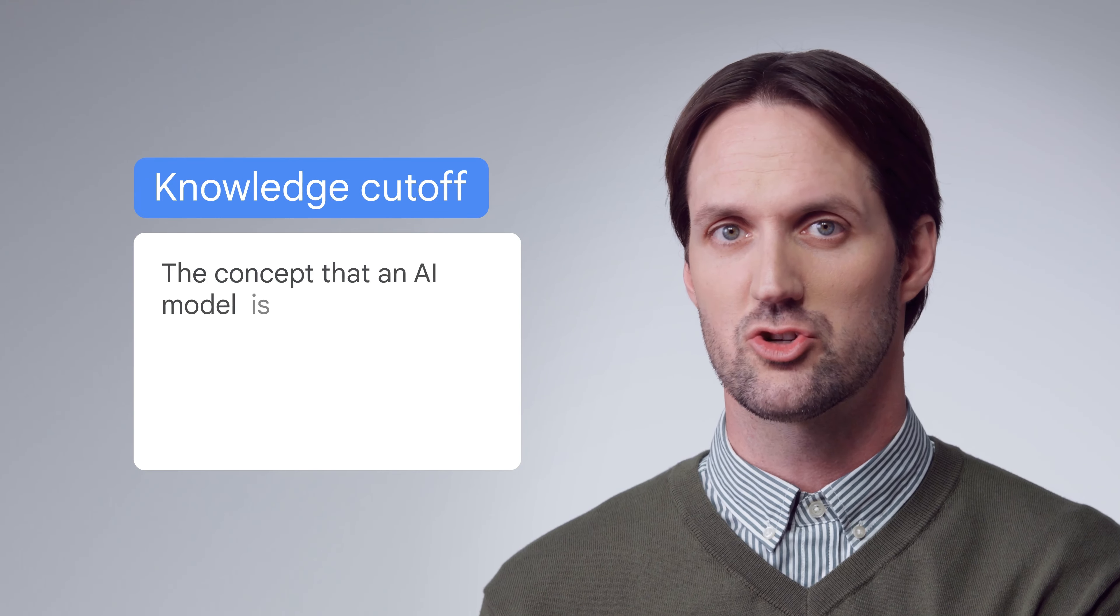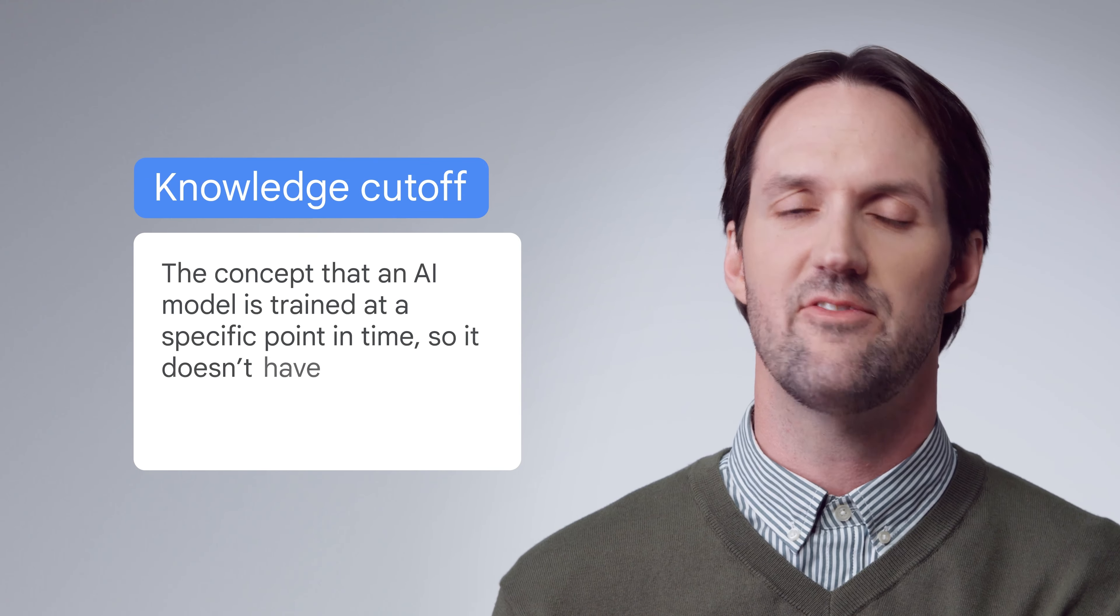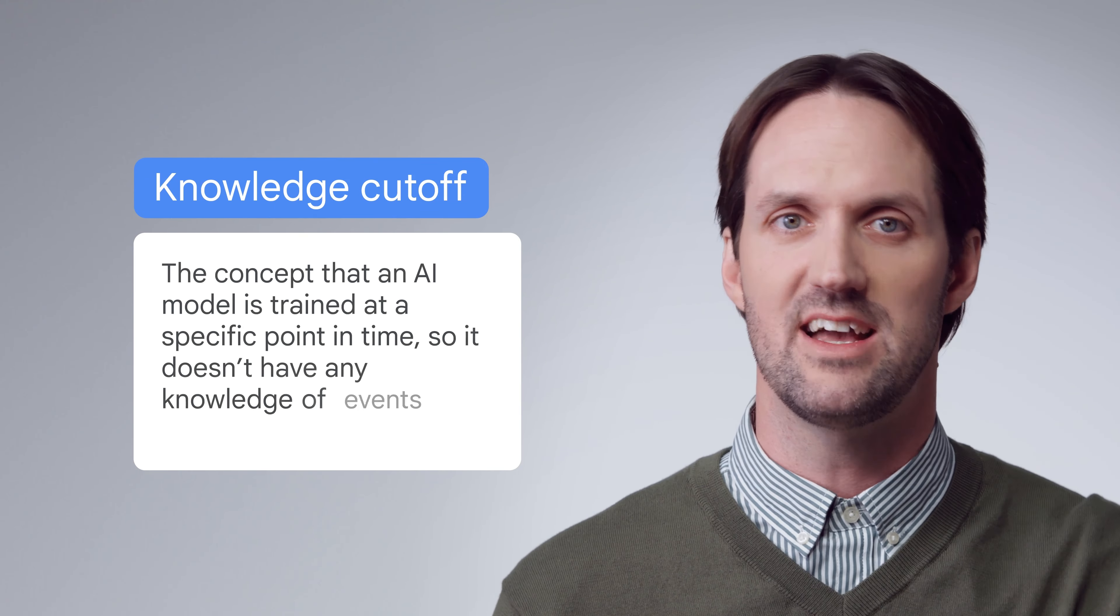One aspect of responsible AI involves managing the limitations of AI models, such as knowledge cutoff. Knowledge cutoff is the concept that an AI model is trained at a specific point in time, so it doesn't have any knowledge of events or information after that date. For example, imagine you're a financial analyst, and you need to prompt an AI tool to analyze yesterday's stock market fluctuations. If the tool's last training date was in 2022, it wouldn't be able to provide you with the information you asked for, because it doesn't know about events or information beyond its last training date. In situations like these, well-designed AI tools should recognize their limitations and respond accordingly.